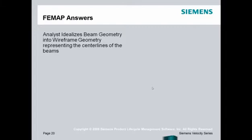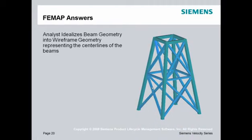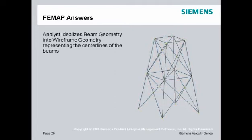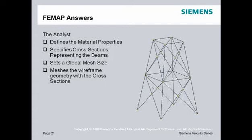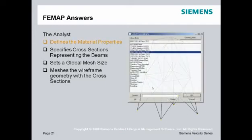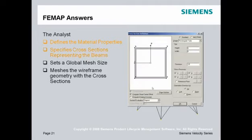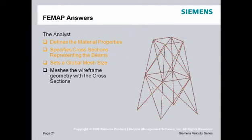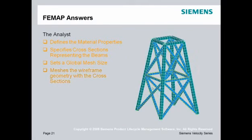So what we'll do is the standard process a FEMAP user would use. You bring in your solid model, extract centerlines to find the center of the geometry, and specify a material property — 6061-T6 aluminum. You then set up your cross sections, the 6x6 and 4x4 boxes, set a global mesh size, and mesh it. The model has very few nodes, so you can quickly edit material and cross-section properties, change tube thicknesses, and add or remove stiffening tubes to optimize your design.